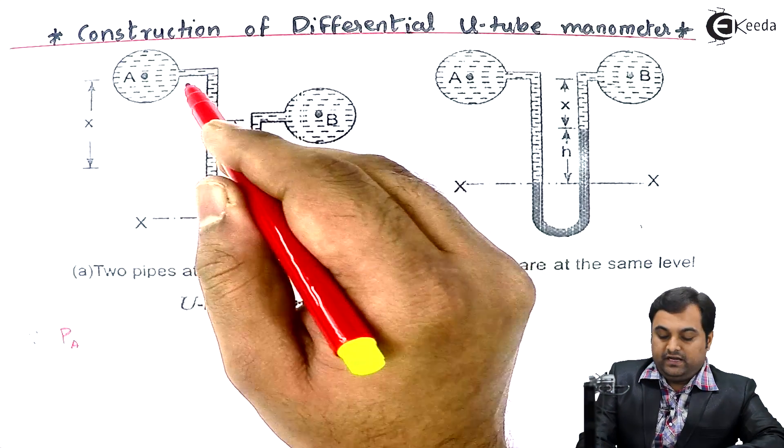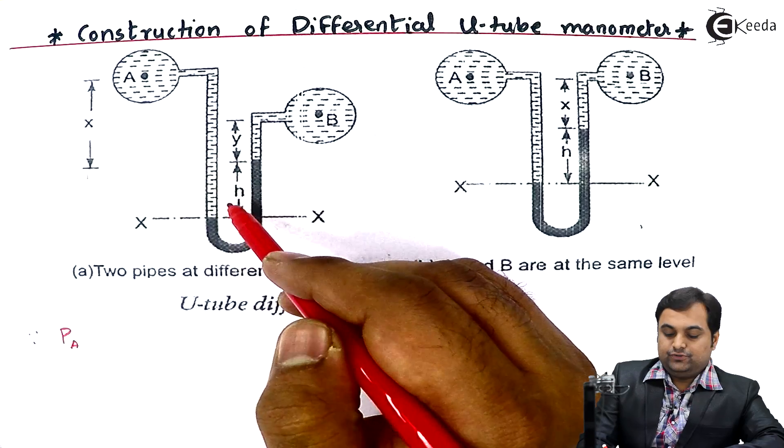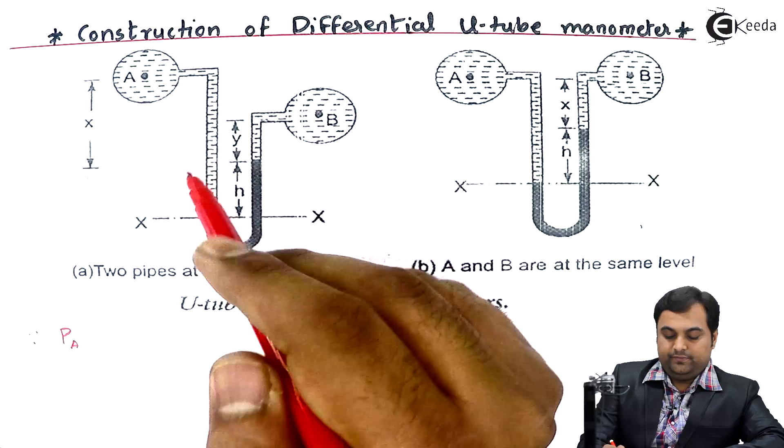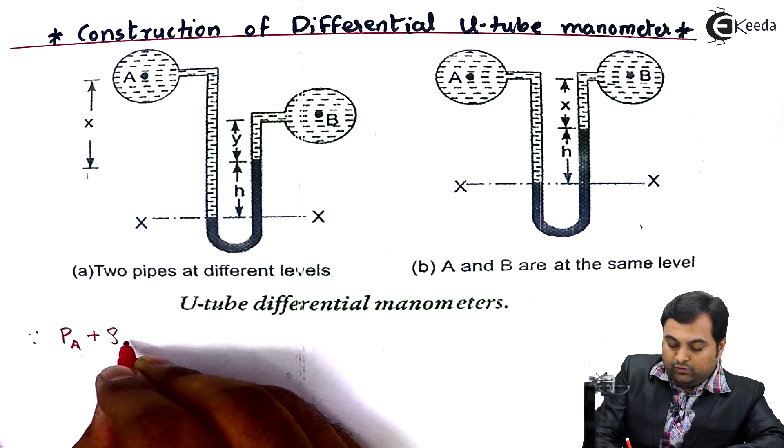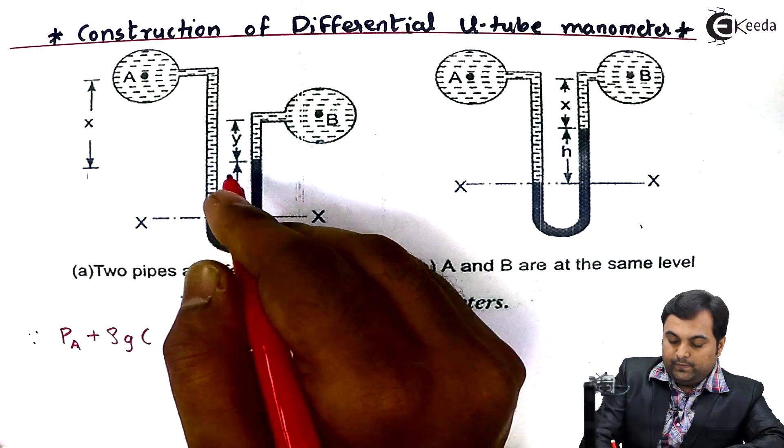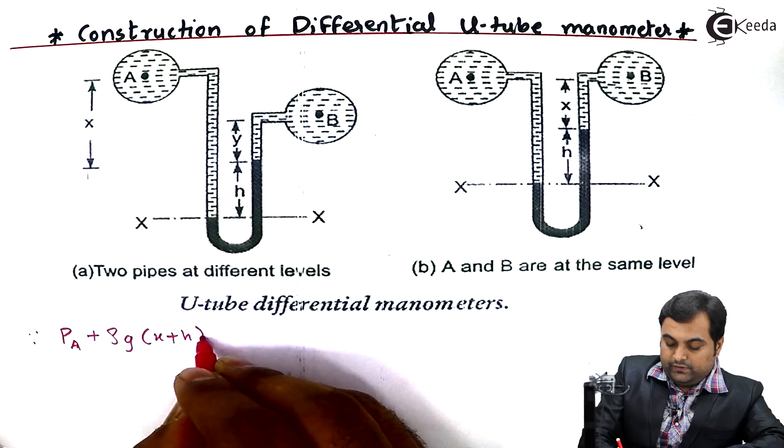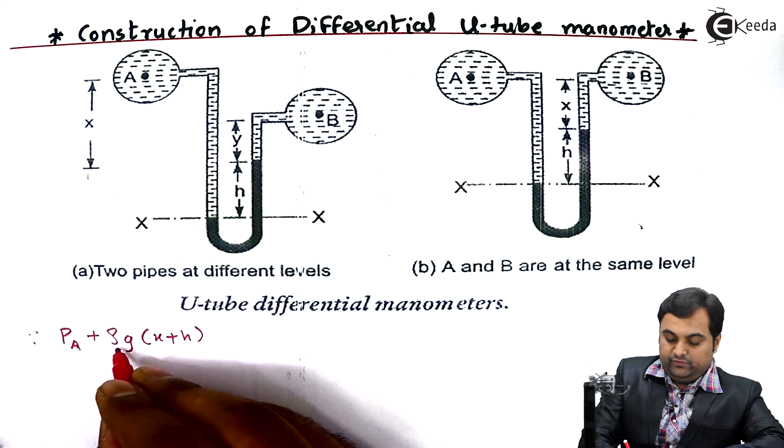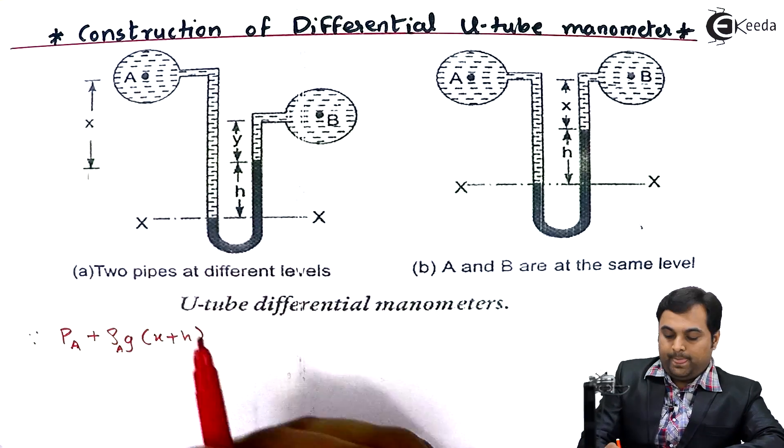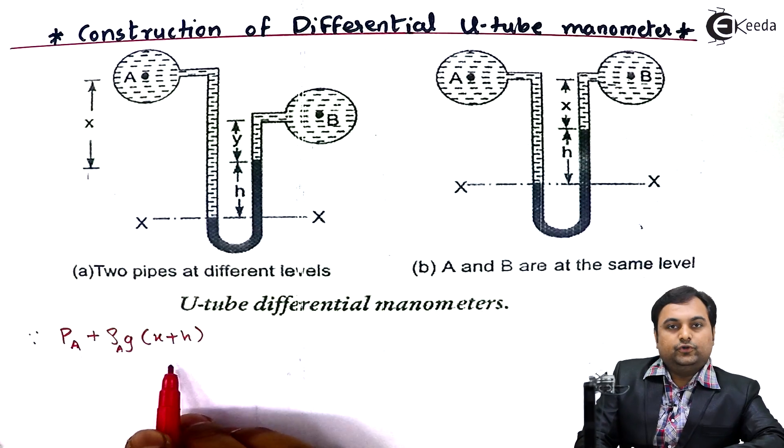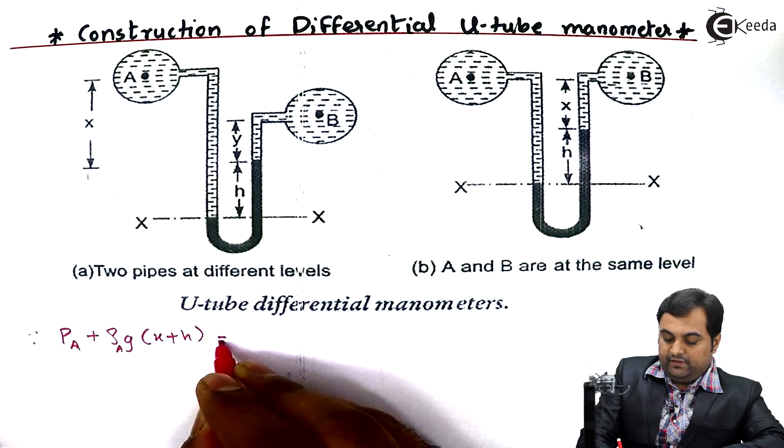Here we have pressure in pipeline A, so I'll denote it as P_A. Next we have this entire column of fluid which is filled. The height of this column will be X plus H, so there is pressure exerted by this column and it would be given by hydrostatic law: that is rho_A times g times (X plus H), where rho_A is the density of fluid from pipeline A.